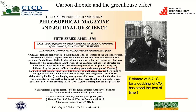Arrhenius talked about this idea of a hothouse, and he made a calculation which says that if you double CO2 in the atmosphere, you'd expect the temperature to rise between 5 and 7 degrees at the surface. Now that calculation is still about right — his back-of-the-envelope calculations are what we think now. By the way, the amount of carbon dioxide in the atmosphere is only about 0.03 percent — it's a real trace gas — but it's having an enormous effect on the temperature.